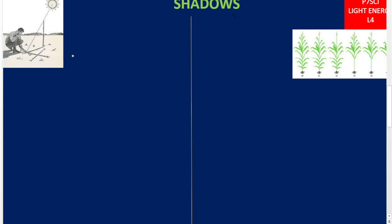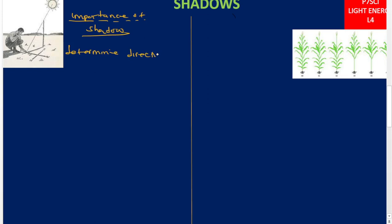Now let us look at the importance of shadows in our daily life. First, we use shadows to determine direction. As you can see, this man has a stick — which is opaque — and it has cast a shadow. He has drawn a compass to tell where to go. So shadows can be used to determine direction.